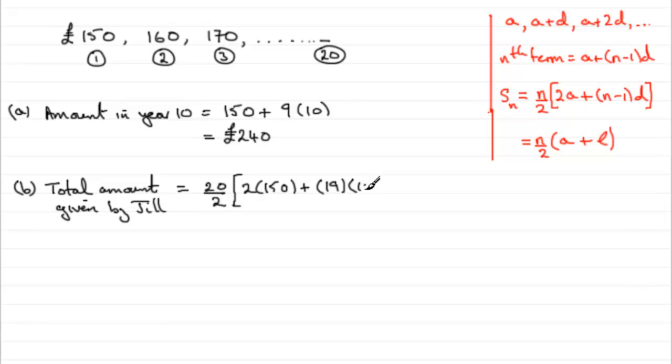multiplied by d, the common difference, which is 10. And, again, if you work that out, what you find you get is 4,900 pounds.